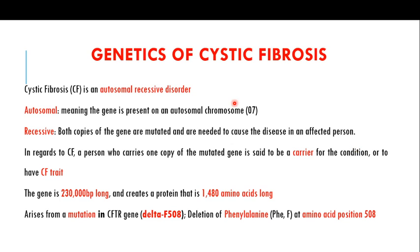In this part I want to focus on the genetics and the inheritance pattern of cystic fibrosis. Cystic fibrosis is an autosomal recessive disorder. Autosomal means the gene is present on an autosomal chromosome — in this case it is present on chromosome number seven. Recessive means that both copies of the gene must be mutated to cause the disease in an affected person.